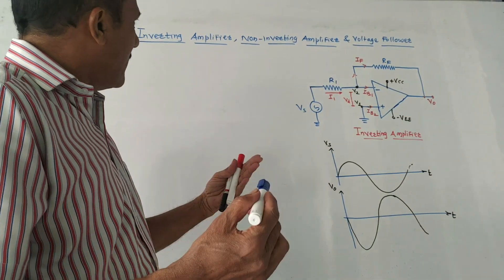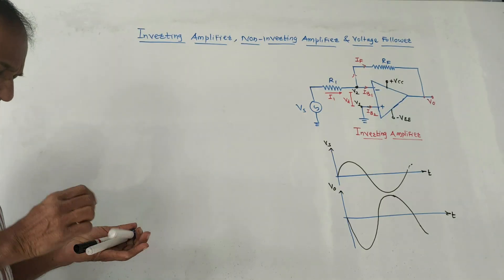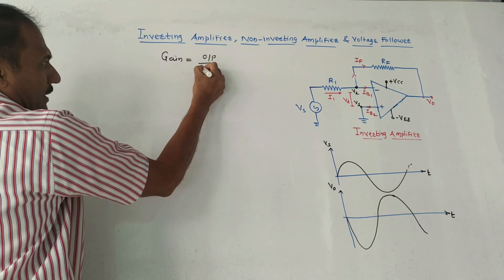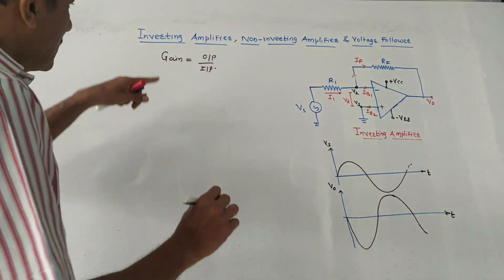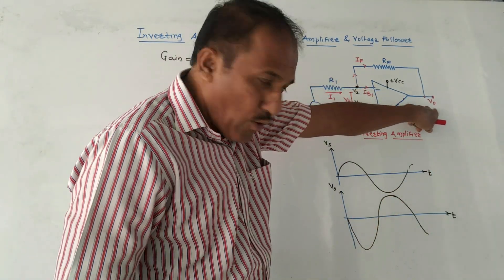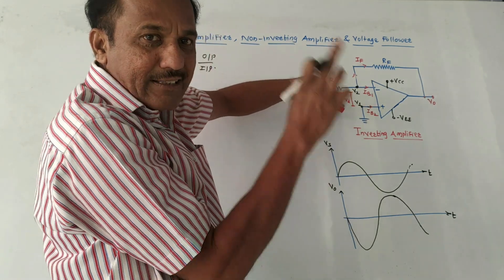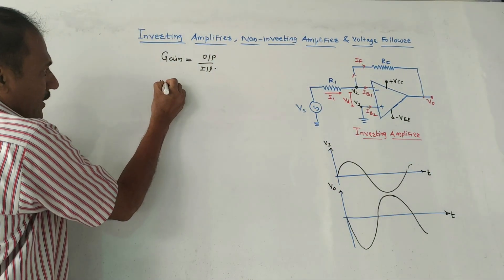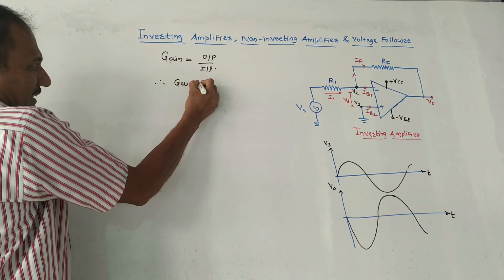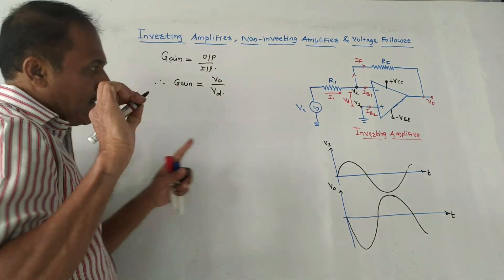Gain is basically defined as the ratio of output to input. For open loop gain, the output is V0 and the input is Vd — the voltage between the negative and positive terminals of the op-amp. So we can write: open loop gain A = V0 / Vd, which gives us Vd = V0 / A.